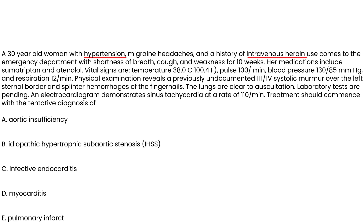Clinical vignette two: a 30-year-old woman with hypertension, migraines, and a history of IV heroin use comes to the ED with shortness of breath, cough, and weakness for 10 weeks. Physical exam reveals a previously undocumented systolic murmur grade 3–4 over the left sternal border and splinter hemorrhages of the fingernails. With IV drug use, a fever, splinter hemorrhages, and a murmur, the tentative diagnosis is endocarditis.